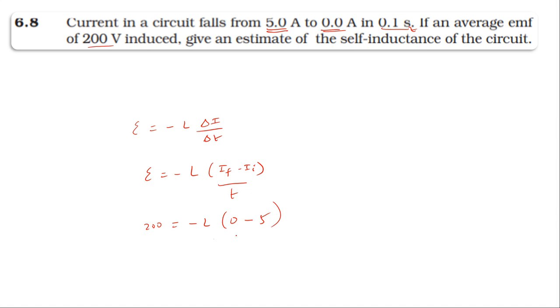So 0.1 times 200 equals minus times minus which is plus five times L. So 200 times 0.1, which is 20, equals five times L.